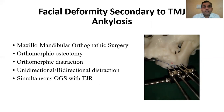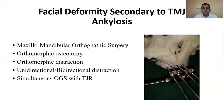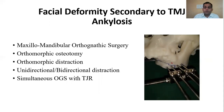Another associated problem is facial deformity secondary to temporomandibular joint ankylosis. To correct these deformities, the armamentarium includes maxillomandibular orthognathic surgeries, orthomorphic osteotomy, orthomorphic distraction, unilateral, bilateral, or multifocal distraction osteogenesis, and simultaneous orthognathic surgeries along with total joint replacements. Facial deformity is more pronounced in patients who develop TMJ ankylosis at an early age and grow with the problem, compared to adult-onset ankylosis.